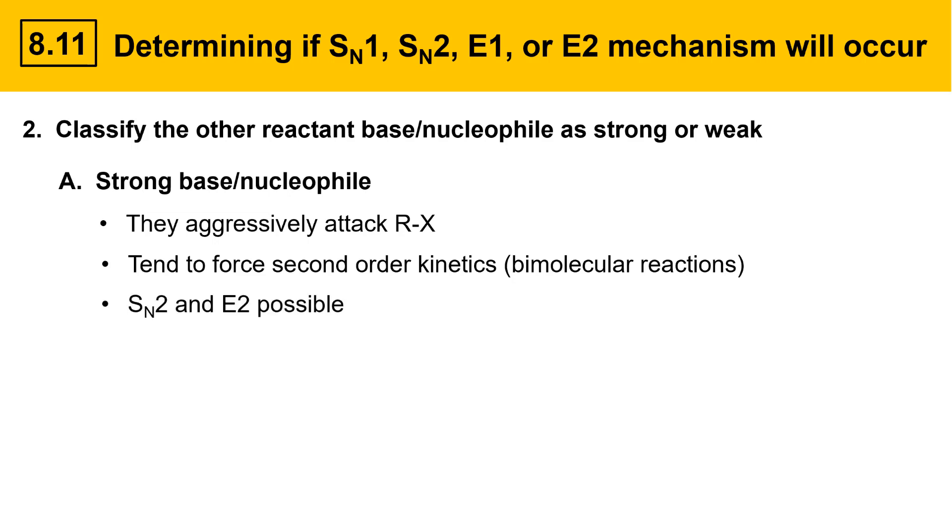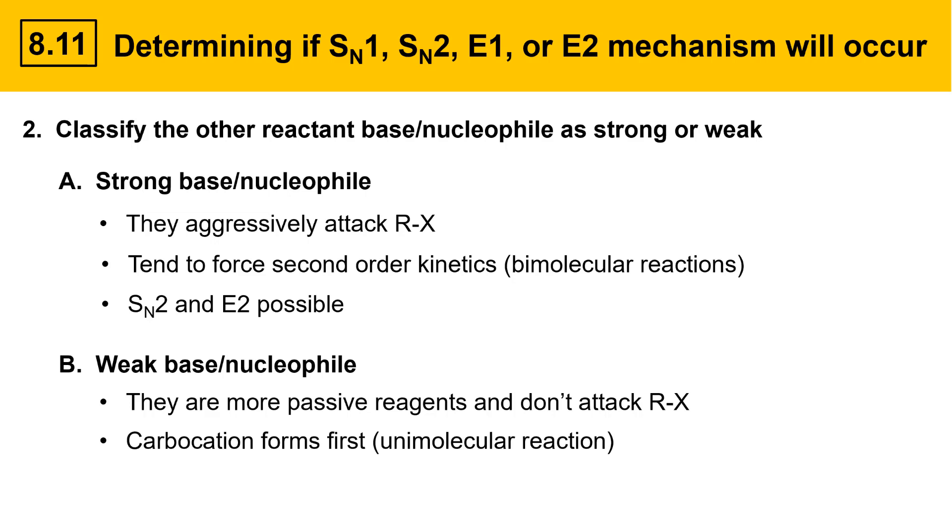If the other component is a weak base and nucleophile, these are more passive reagents, and they don't attack alkyl halides directly. It's only when a carbocation forms that they attack. The carbocation forms first in a unimolecular reaction, and then the weak base, weak nucleophile, will attack the carbocation. This leads to SN1 and E1 reactions.